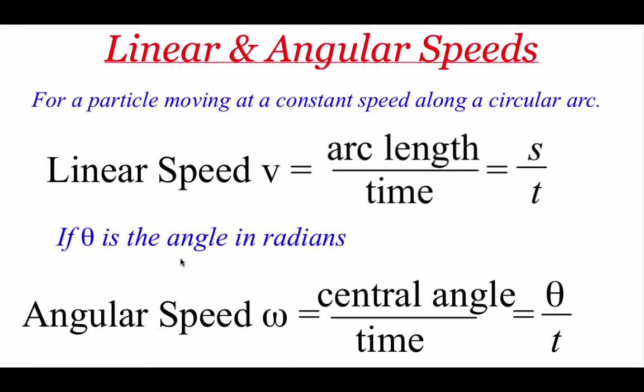We could also track how quickly that central angle theta is changing using this angular speed thing. This little script W is the Greek letter omega. So the way we figure out our angular speed is we take our central angle theta divided by time. And again, just like on the last page, that theta value has to be a radian measure.